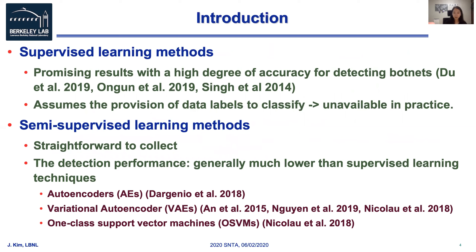Detection based on supervised learning has shown promising results with a high degree of accuracy for detecting botnets. But one complication is that supervised learning assumes the provision of data labels to classify, which are often unavailable in practice. Indeed, labels in network traffic are difficult to obtain in terms of scarcity of occurrence and difficulty in classification. Another line of anomaly detection based on machine learning, such as autoencoder, variational autoencoder, and one-class support vector machines, relies on semi-supervised learning that constructs a learning model using only normal profiles, which is much more straightforward to collect. However, the detection performance is generally lower than supervised learning techniques.